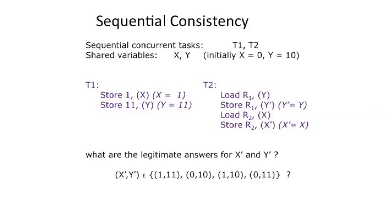Here's a fun example of sequential consistency. Let's look at two threads, T1 and T2, and four variables: X, Y, X prime, and Y prime. X prime and Y prime are the outputs — we do stores to those. At the beginning of time, X and Y are initialized to 0 and 10 respectively. Let's talk about what are valid sequentially consistent outcomes here — what are valid values for X prime and Y prime. It's not actually easy to detect right off the bat which outcomes are sequentially consistent and which are not.